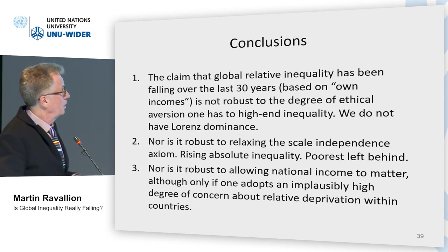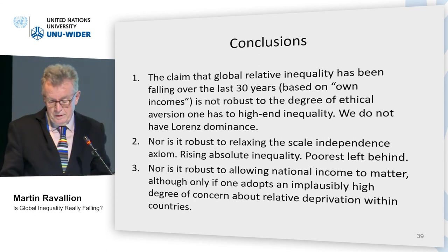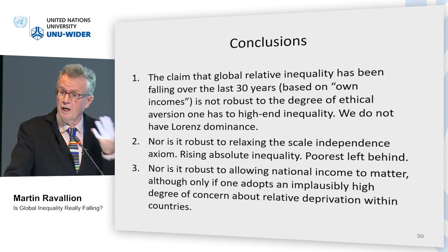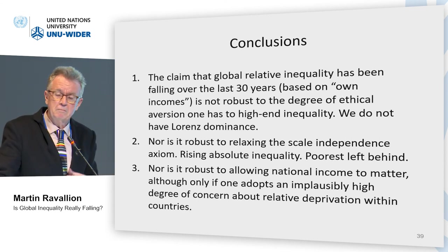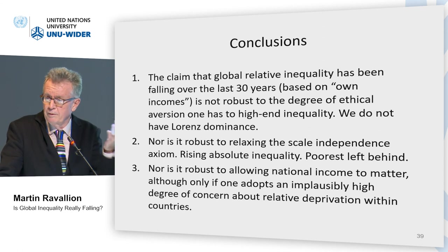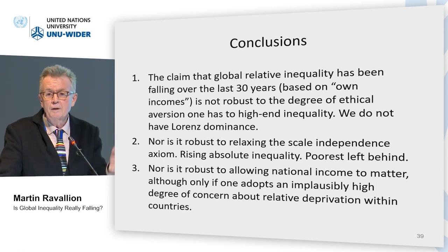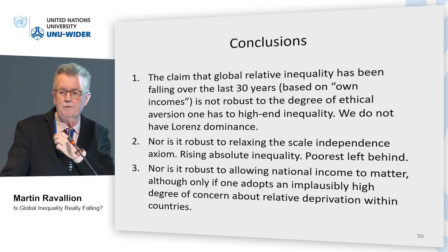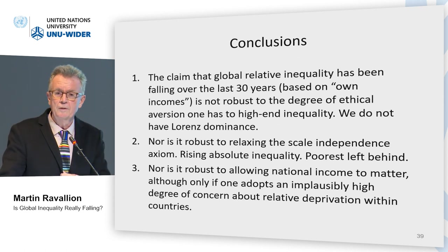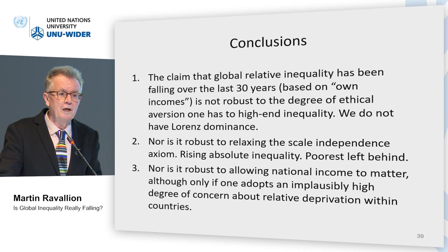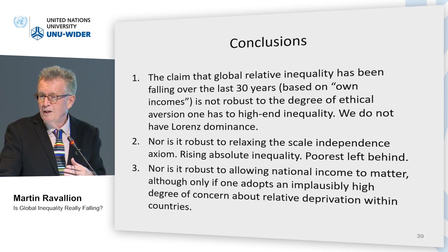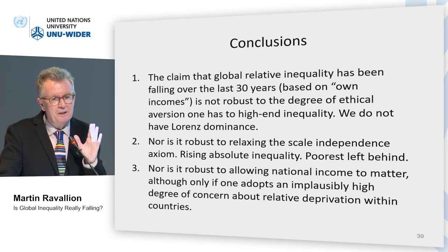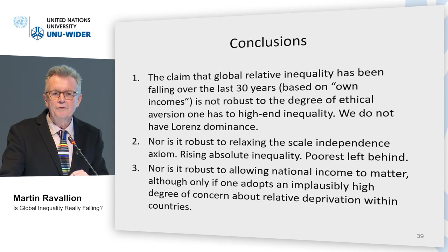Conclusions: the claim that global relative inequality has been falling is not robust, but the degree of non-robustness matters. You need a very high ethical aversion to inequality — an Atkinson parameter over 5 — which is possible but extreme. It's clearly not robust to relaxing scale independence — that's a big non-robustness. And it's not robust to allowing for relative deprivation — that's clear — but it requires an implausibly high degree of nationalism to reverse the conclusion. I believe quite remarkably high nationalism is required to reverse the conclusion.